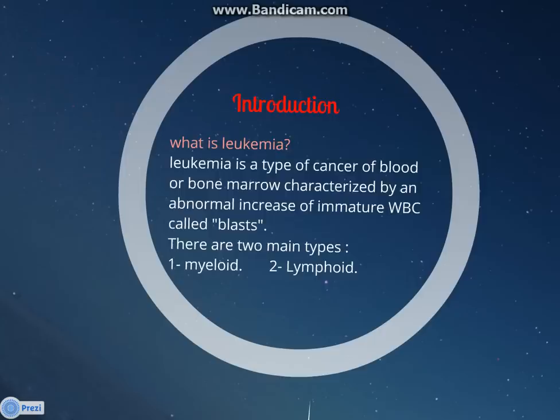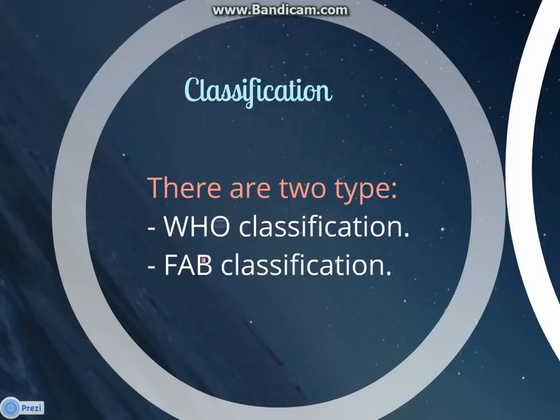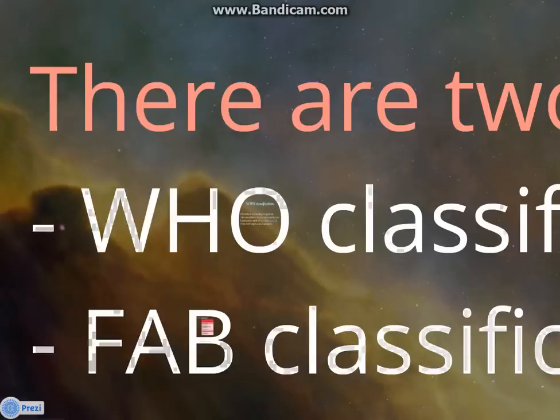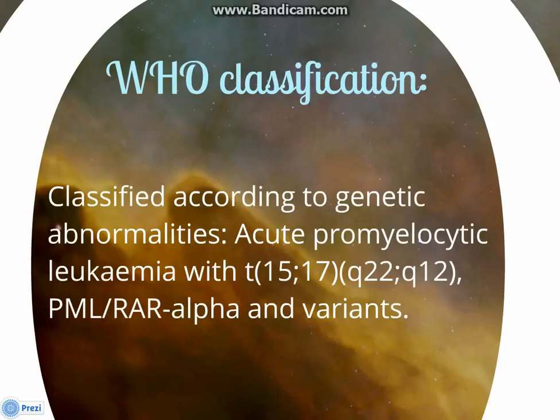Our subject is a type of myeloid leukemia which can be classified in two ways: WHO classification and FAB classification. WHO classification classifies according to genetic abnormalities. Acute Promyelocytic Leukemia with translocation in chromosome 15 at the long arm at locus 22 with chromosome 17 long arm at locus 12. PML/RAR-alpha and variance.